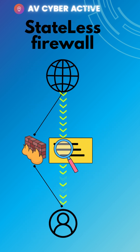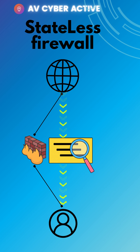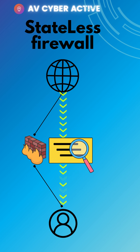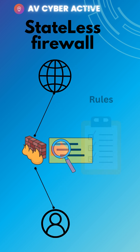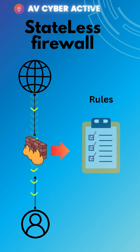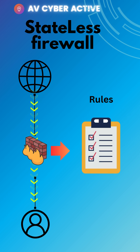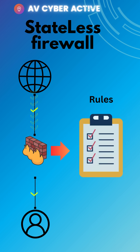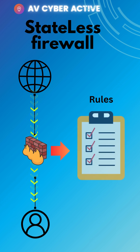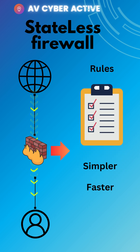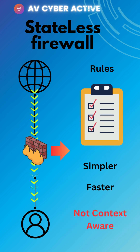Stateless firewall, on the other hand, operates on a packet-by-packet basis without considering the context of active connections. It filters traffic based on predefined rules and does not maintain any information about the state of connections. Stateless firewalls are usually simpler and faster, but they can't make decisions based on the current state of a connection.